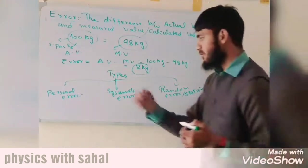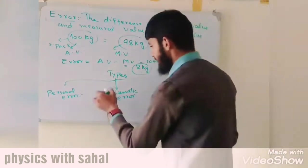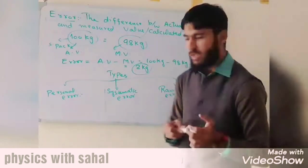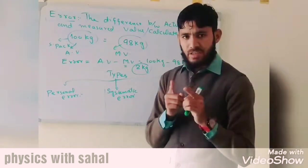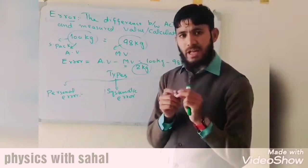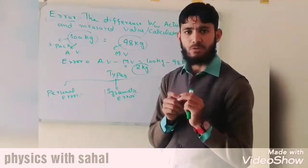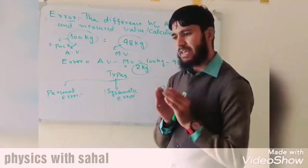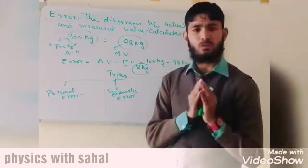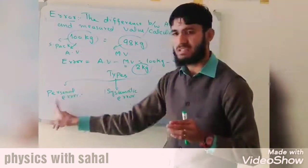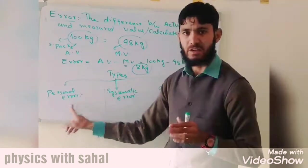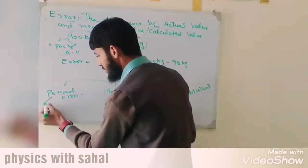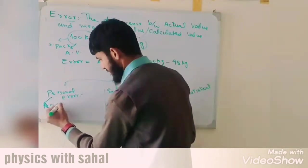We will first discuss personal error. Personal error is the error that arises in a measurement due to a person. The error which arises in a measurement caused by a person is called personal error.